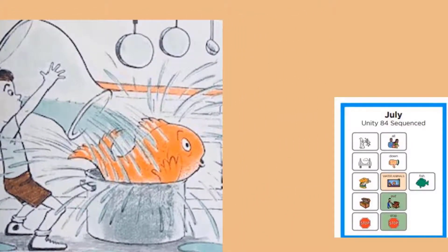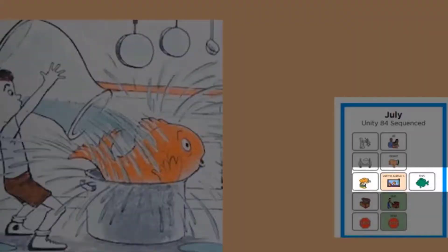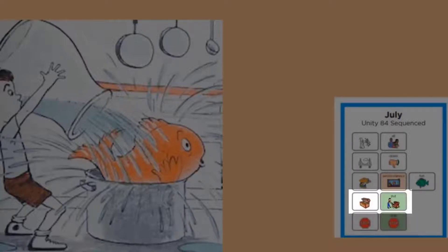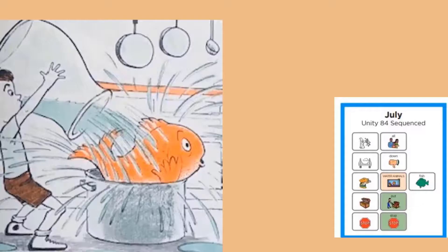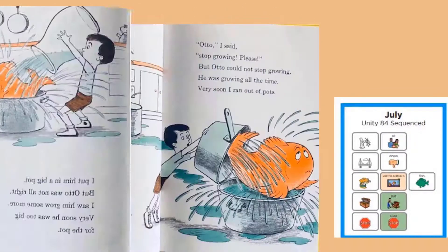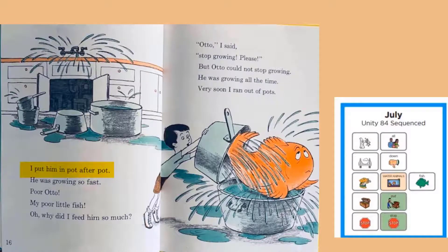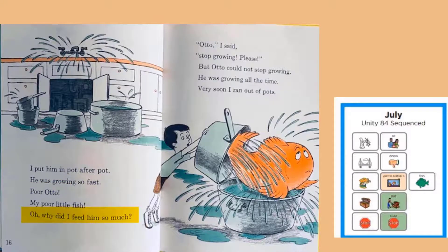Look at how big the fish is getting. That fish is so big it outgrew the vase he had to put it in. It will not stop growing. I wonder where he's going to have to put him next. He looks too big for the pot. Do you think he's growing because the boy gave him all the food? What would you do with a fish that big?